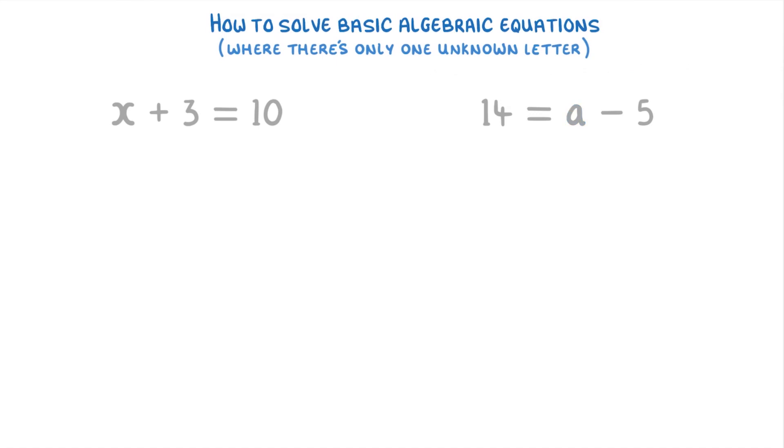When you're asked to solve equations like these, you're really being asked to find out what number the unknown letter represents. So in this first one we're being told that something plus three equals ten, and we have to find out what that something is. Now you might just know automatically that the answer here is seven, because you know that seven plus three equals ten.